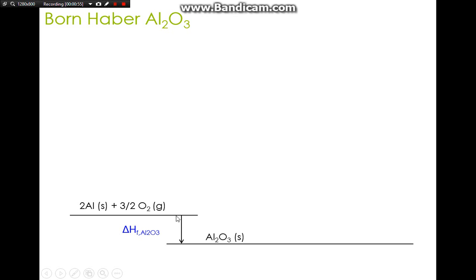Now recall the key concepts: we have to change the elements into gaseous ions, so they have to go through forming of gaseous atoms and then they lose or gain electrons to form the ions. Let's do aluminum first - we have two moles of aluminum solid, so we need to convert the aluminum to aluminum gas.